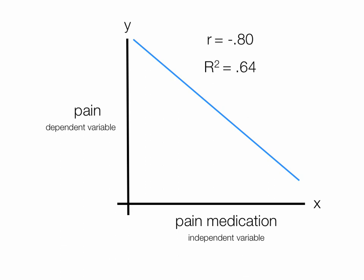In this case, we would say that, roughly speaking, when we modify or manipulate pain medication, 64% of the change in pain can be attributed to the change in pain medication.